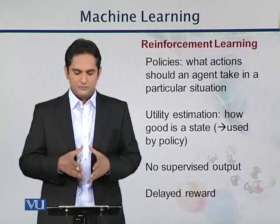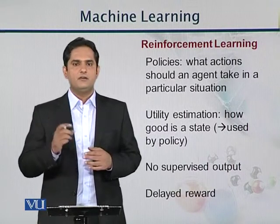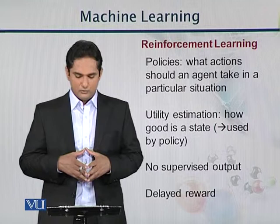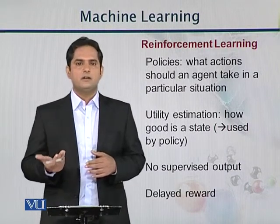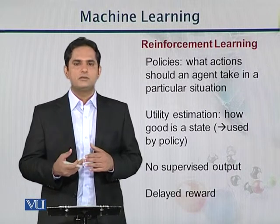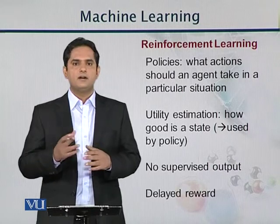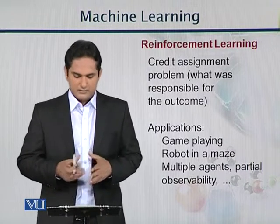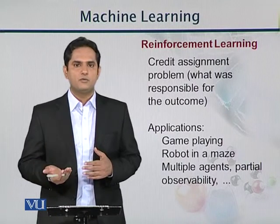What is utility estimation in reinforcement learning? It asks: how good is the state we are currently in? That is part of reinforcement learning's policy making. There is no supervised output, and the reward is delayed — the reinforcement learning result will be delayed because the feedback is already being used to improve results, so the final result comes later. An example is the credit assignment problem, which asks which decisions led to a good or bad outcome, such as which customer has gone bankrupt.